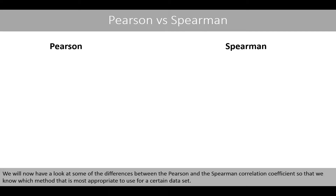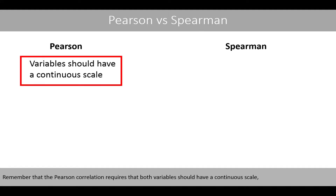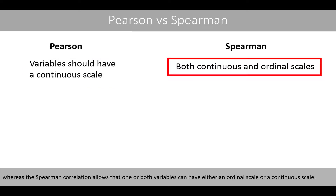We'll now have a look at some of the differences between the Pearson and the Spearman correlation coefficient so that we know which method is most appropriate to use for a certain dataset. Remember that the Pearson correlation requires that both variables should have a continuous scale, whereas the Spearman correlation allows that one or both variables can have either an ordinal scale or a continuous scale. The Spearman correlation can therefore be used for variables on both continuous and ordinal scale.